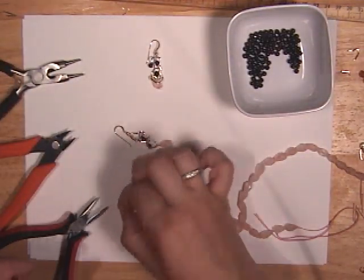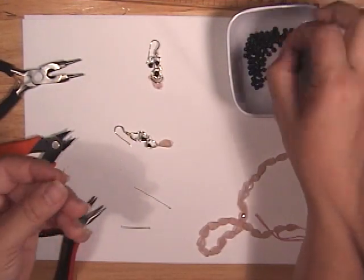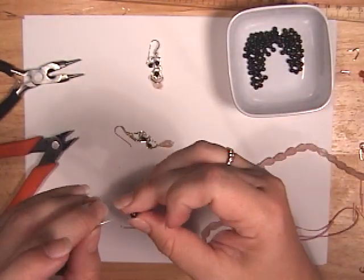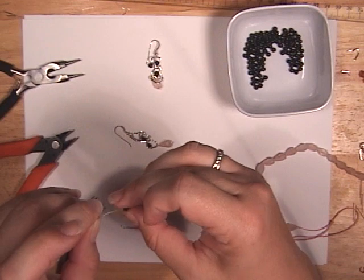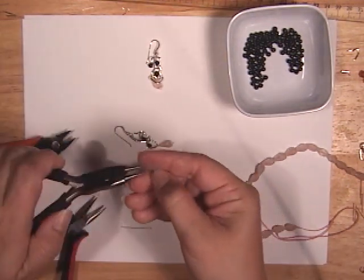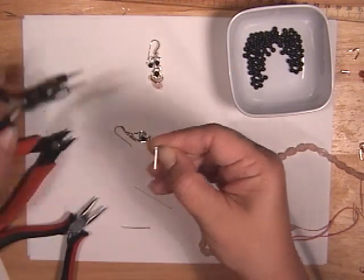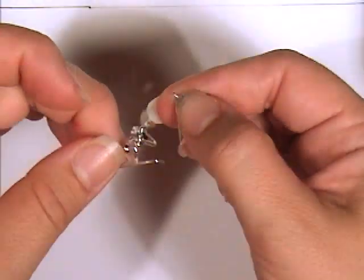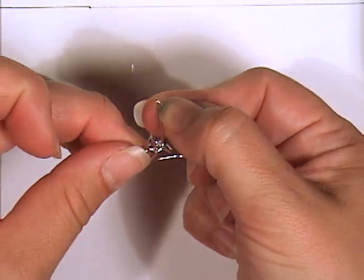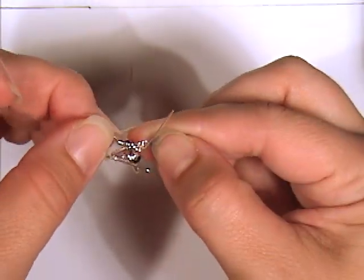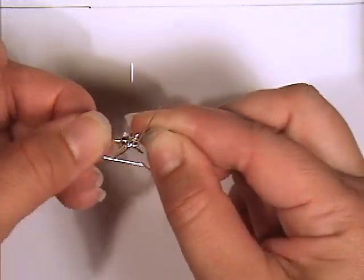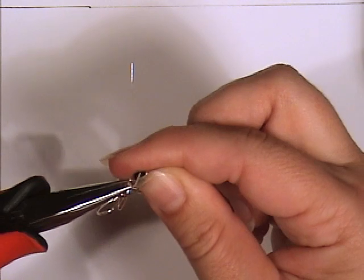Now for the last one, we'll take our head pin, string on the bead, and same as before with the round nose pliers, about 5 or 6 millimeters, give it a loop. And now this time we want to attach this bead to the loop of the ear wire. We want it to dangle from the same place that the chain is dangling from.